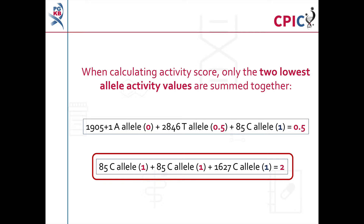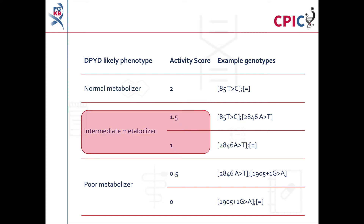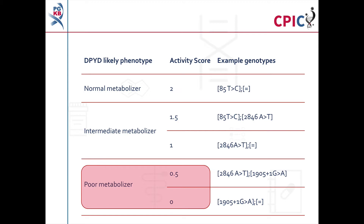These activity values are grouped under DPYD metabolizer phenotypes for the purposes of the CPIC dosing recommendations. An activity score of 2 is classified as a DPYD normal metabolizer. An activity score of 1.5 or 1 is classified as a DPYD intermediate metabolizer. An activity score of 0.5 or 0 is classified as a DPYD poor metabolizer.